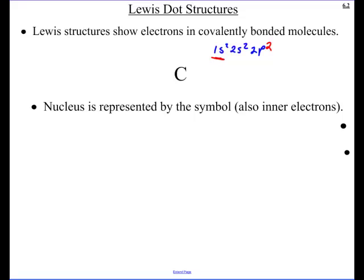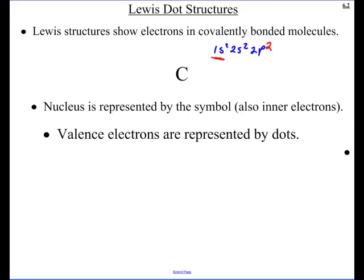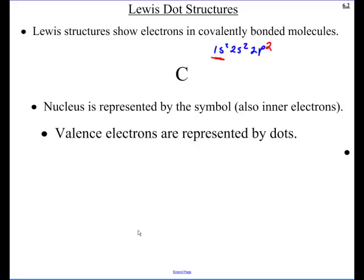In carbon, the inner ones are the two 1s2 electrons. So the C here represents the nucleus and those two core electrons. Now we draw the valence electrons, simply represented by dots. Since this is 2-dimensional, it's standard to put the dots on the four sides. Since there are 4 valence electrons, I'll put 4 dots around the carbon — representing those 4 valence electrons.